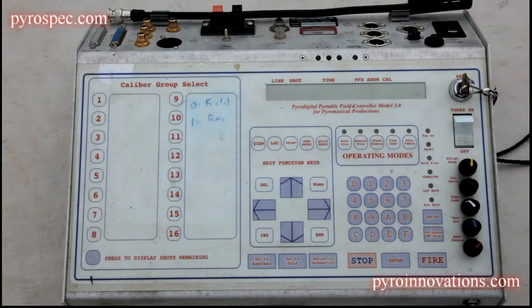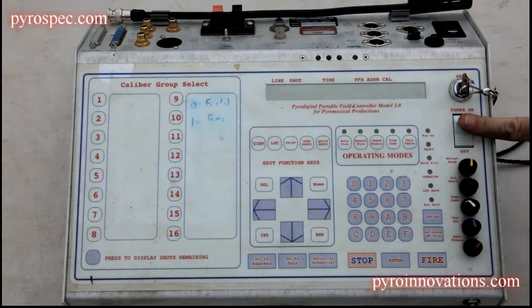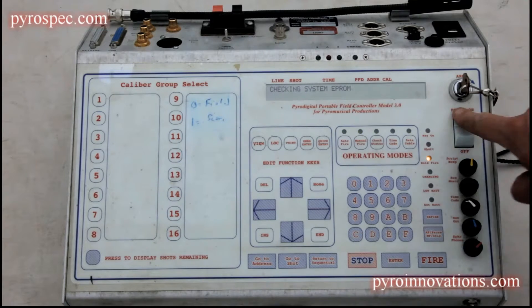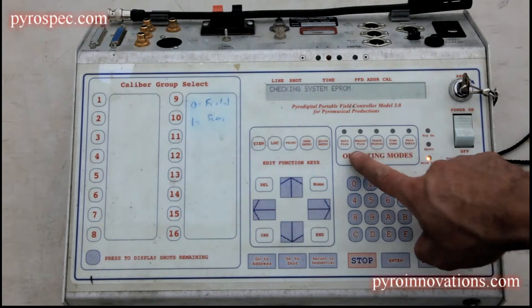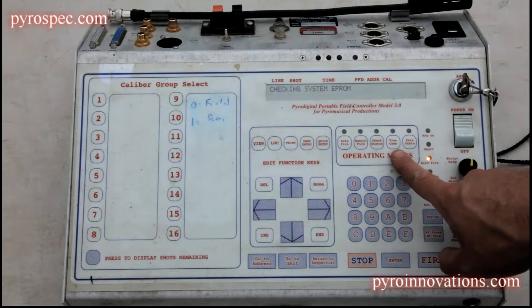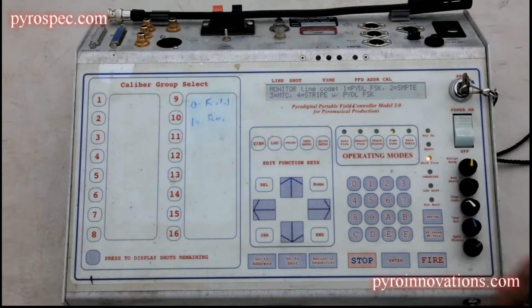The way we do this: we power the system on, and in the operating modes you can see that choice number four here is for timecode, and that essentially puts you into a timecode check mode.